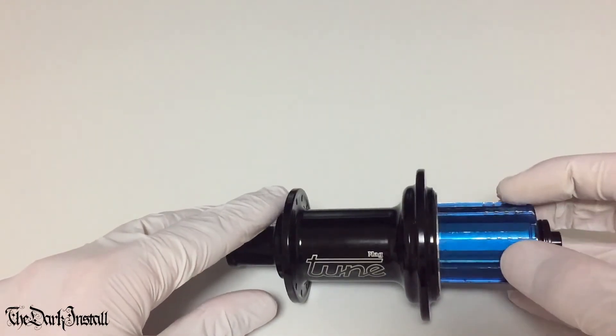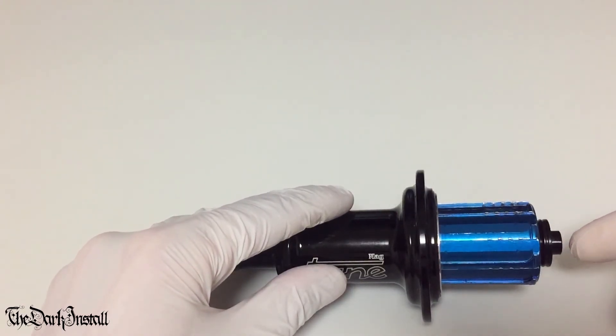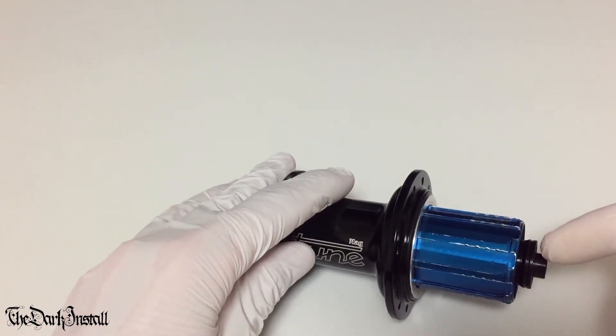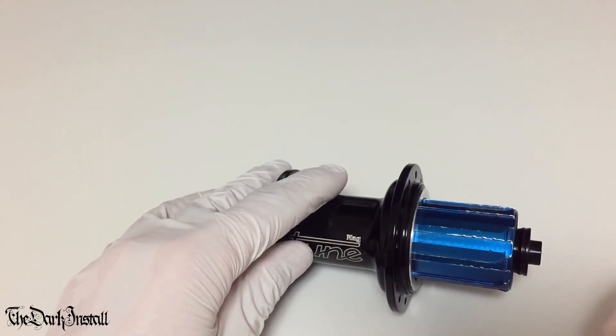And then put the free body back on, lube it up obviously. Drive the axle back through from this side. Check we have the correct amount of washers on this side using the system we'll show you later, and then push on this end cap. That's it. Simple.